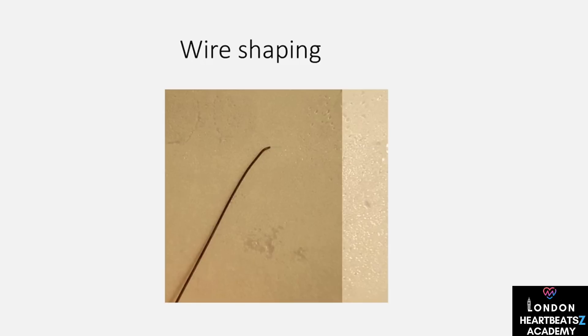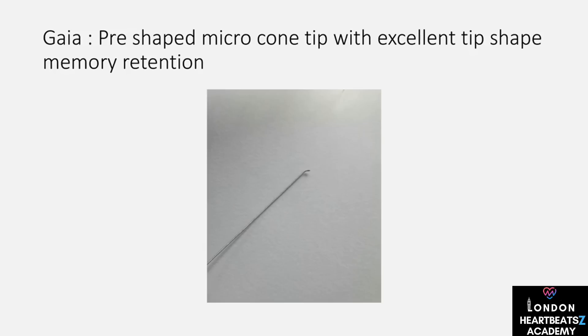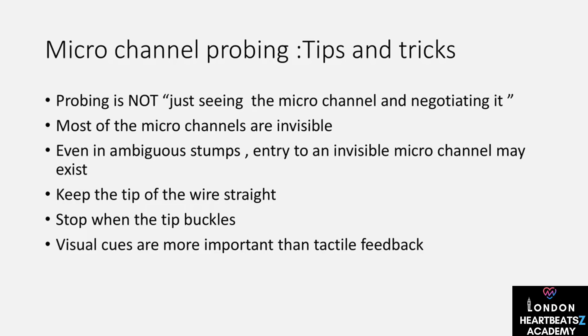Once in position, we switch to a workhorse wire, remove the microcatheter, and proceed with ballooning and stenting. But our job isn't done yet — we must rule out any complications to ensure a safe outcome.